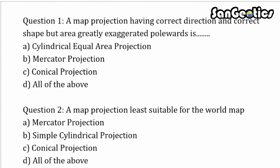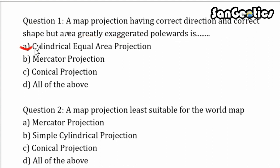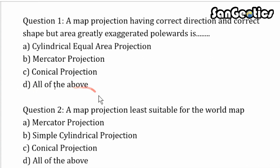Now presenting questions — write your answers in the comment section. Question 1: A map projection having correct direction and correct shape but with area greatly exaggerated towards the poles — what is it? Option A: Cylindrical equal area projection. Option B: Mercator's projection. Option C: Conical projection. Option D: All of the above.